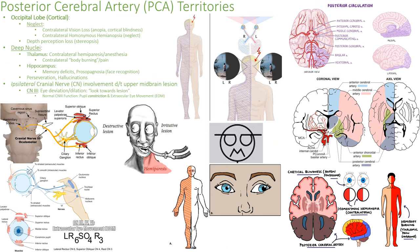So the PCA stroke — the posterior cerebral artery. The PCA is going to feed the back half of the brain. Here's the occipital lobe in the back half of the brain — that's getting fed by the PCA. Also the thalamus gets fed.